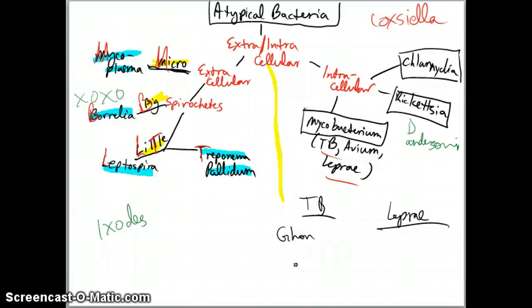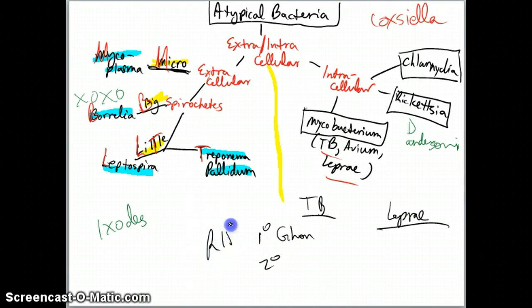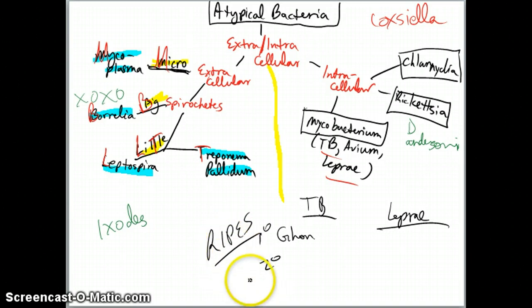TB can progress to Pott's disease, when it disseminates into the vertebral bodies. Ghon complex is primary; caseating granulomas in cavities is secondary. Mycobacterium avium is for AIDS patients with less than 50 CD4 count. You can treat TB with RIPES - that's your mnemonic: Rifamycin, Isoniazid, Pyrazinamide, Ethambutol, and Streptomycin. We'll get into all the drugs when we cover pharmacology.